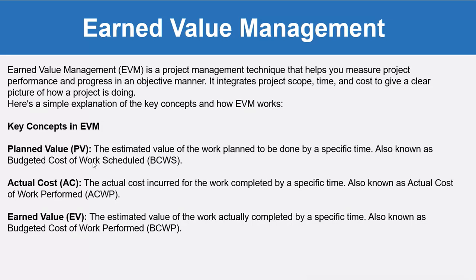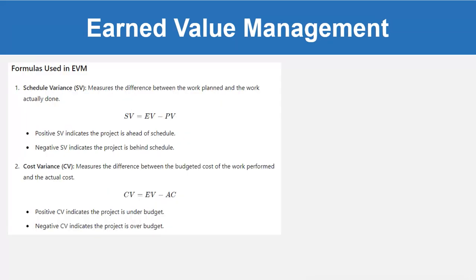The key concepts involved in earned value management are: Planned Value (PV) — the estimated value of the work planned to be done by a specific time, also known as Budgeted Cost of Work Scheduled (BCWS). Actual Cost (AC) — the actual cost incurred for the work completed by a specific time, also known as Actual Cost of Work Performed (ACWP). Earned Value (EV) — the estimated value of the work actually completed by a specific time, also known as Budgeted Cost of Work Performed (BCWP).